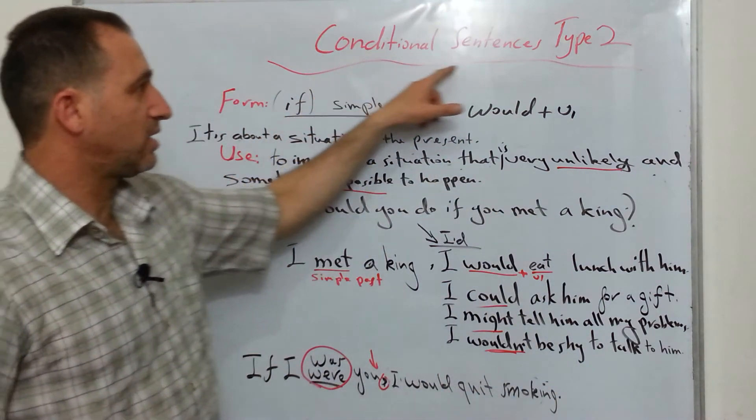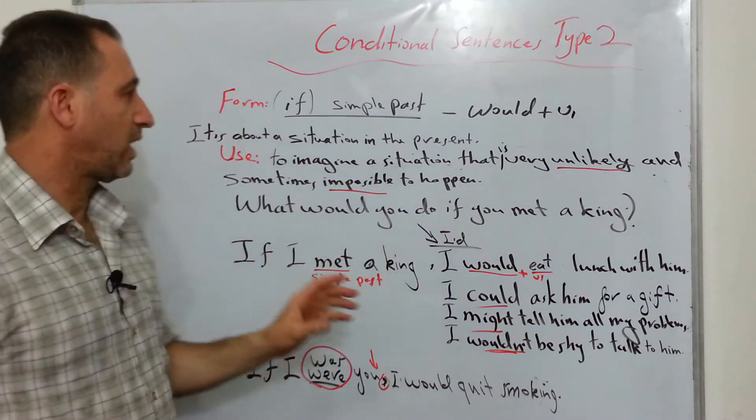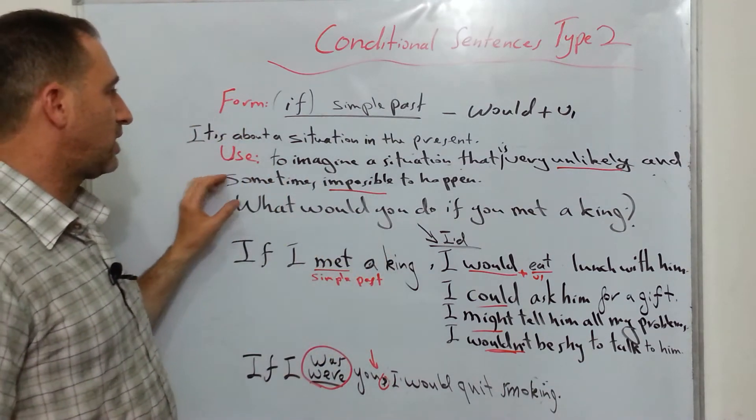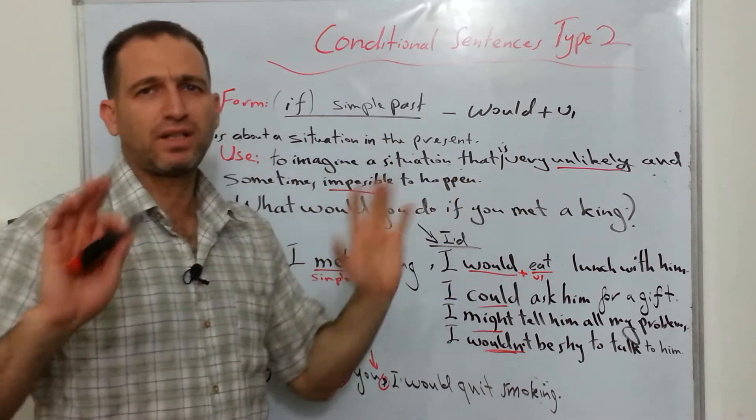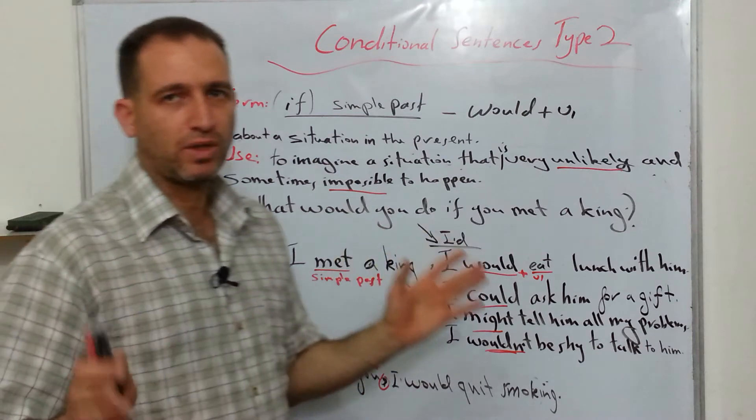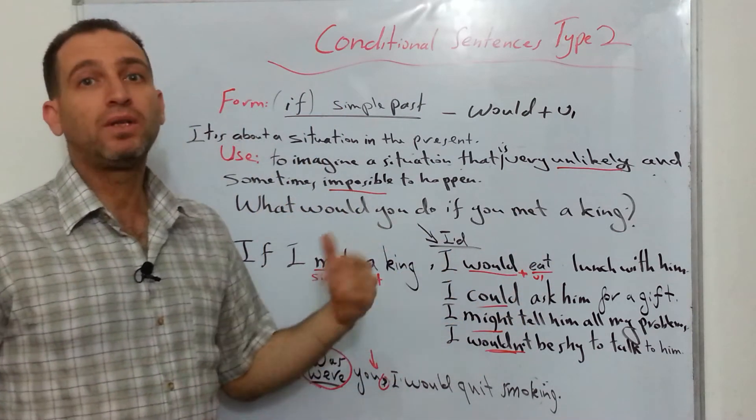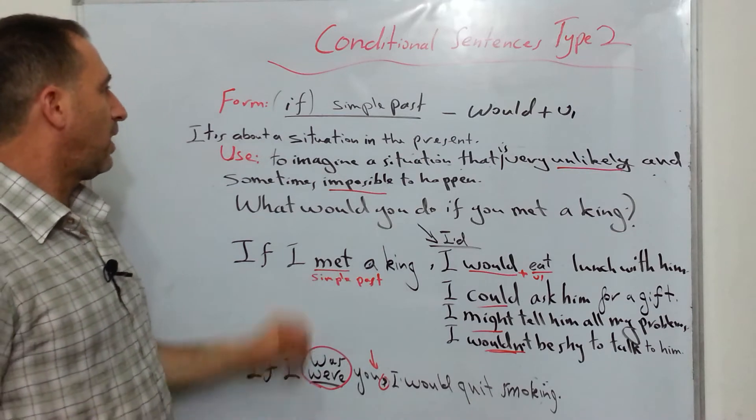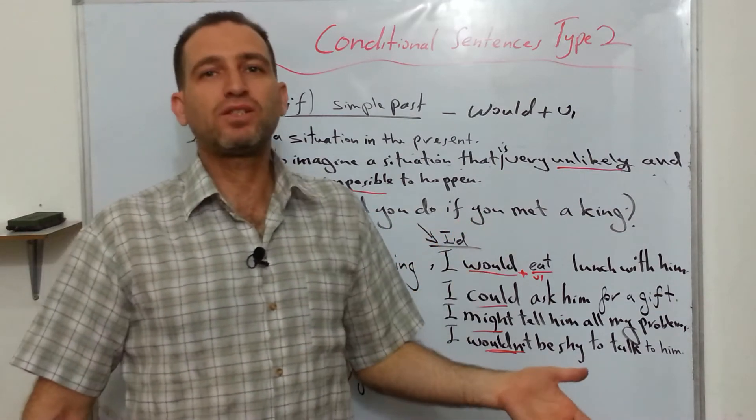So today we're talking about conditional sentences type 2. As I have already told you, why do we use it? We use it to imagine a situation that's very unlikely, almost impossible, very unlikely and sometimes impossible to happen.